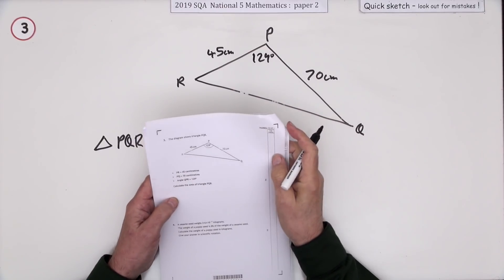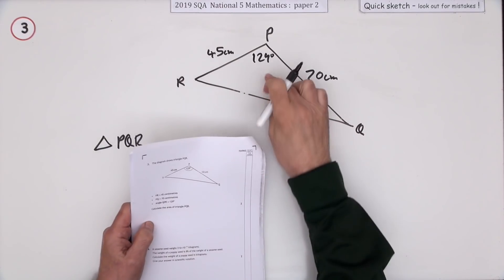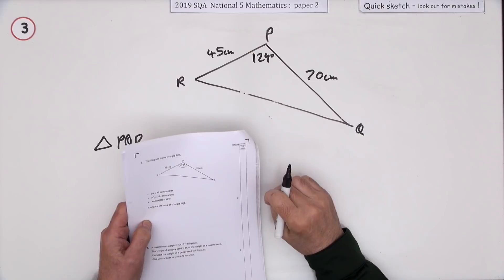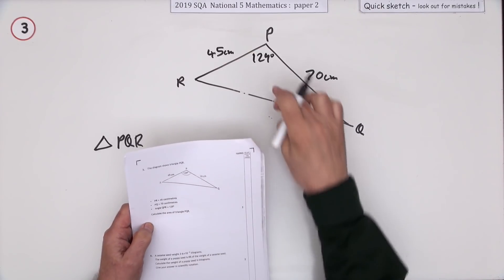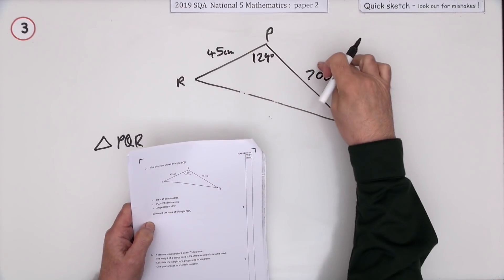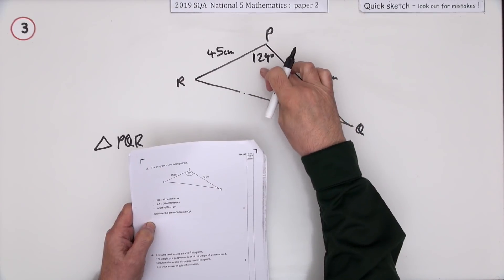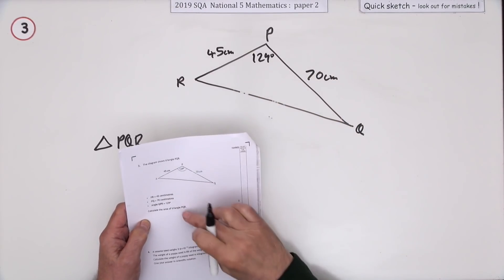Number three from paper two of the 2019 National 5. A non-right-angle triangle, a scalene triangle. You're given this triangle with these sides, 45 and 70, and an angle of 129 between them. It says what's the area of this triangle?